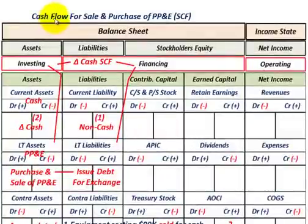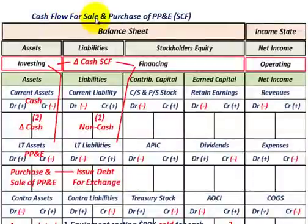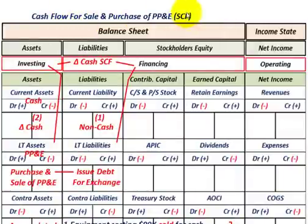What we're going to be going over here is an example where we're going to be looking at the cash flow for the sale and purchase of some property, plant, and equipment. When we're talking about cash flows, we're talking about the statement of cash flows. For the statement of cash flows, we really have three different activity sections that we're looking at.